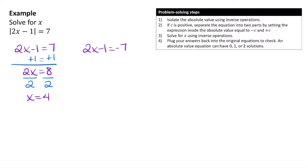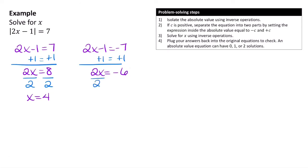Now for the second equation, I add 1 to both sides, giving me 2x = negative 7 plus 1, which is negative 6. Then dividing both sides by 2 gives x = negative 3.